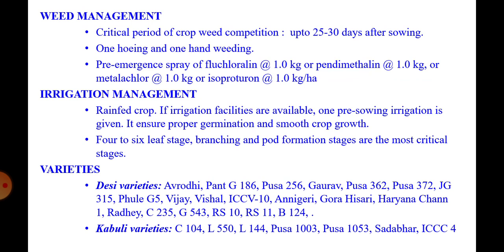The critical period of crop-weed competition is up to 25-30 days after sowing. One hoeing and one hand weeding is sufficient to check the weeds. Herbicides can also be applied as a pre-emergence spray of fluchloralin at 1 kg, or pendimethalin at 1 kg, or metolachlor at 1 kg, or isoproturon at 1 kg per hectare — these are the most effective options.